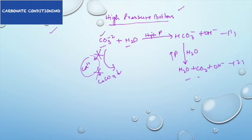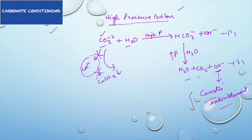Under high pressure, carbonate ions get hydrolyzed to water and CO₂, and the hydroxide ion concentration becomes higher, which can lead to caustic embrittlement. So instead of achieving something good, we end up with something bad. Therefore, carbonate conditioning fails in high pressure boilers, though it is successful in low pressure boilers.